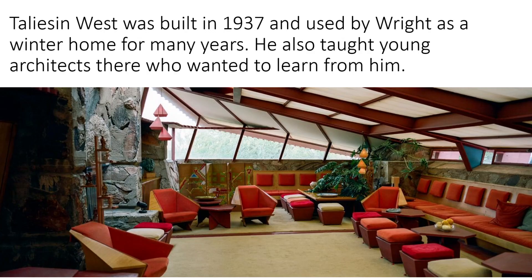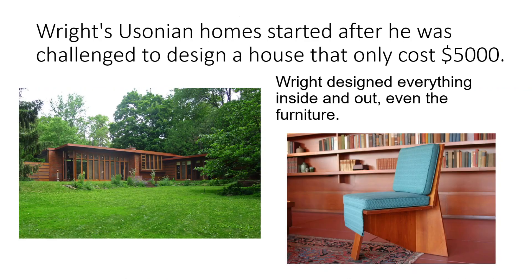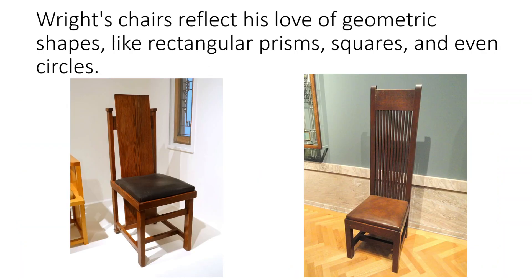Taliesin West was built in 1937 and was the space Wright used as a training center for architects and apprentices who came to study with him. He used squares and rectangles in his architecture. Later he started making Usonian homes after being challenged to make a home that cost five thousand dollars, and even in those very inexpensive homes — you can see an example on the left — he designed everything down to the furniture.